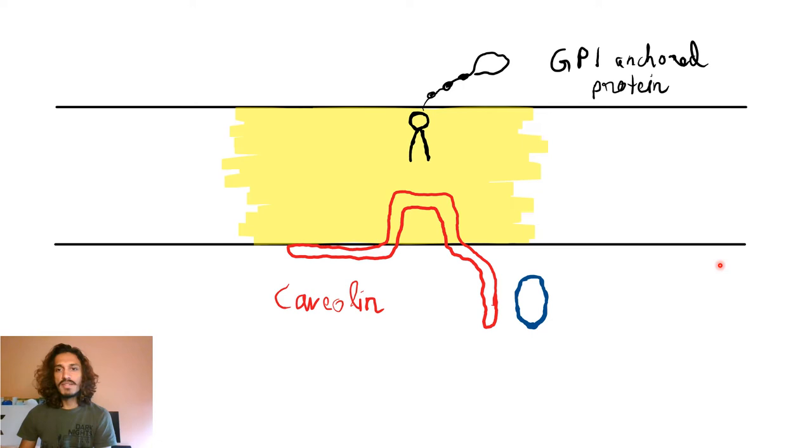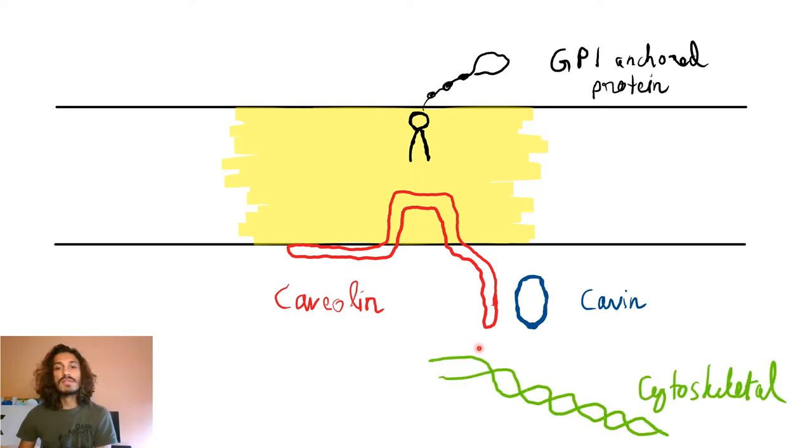Apart from this, there is one other component called the cavin, which is a peripheral protein. This is an integral protein, this is a peripheral protein, cavin. There are also cytoskeletal structures which are there closely associated with it.